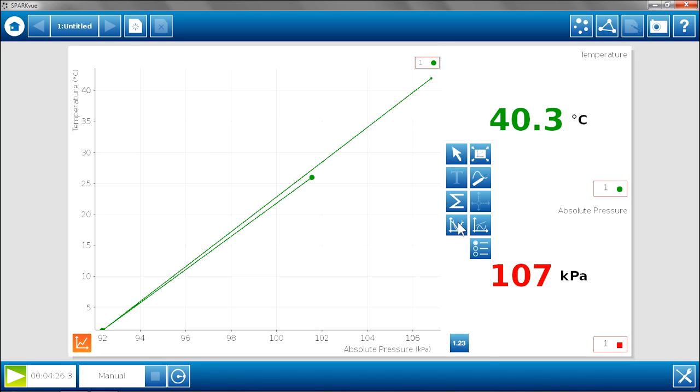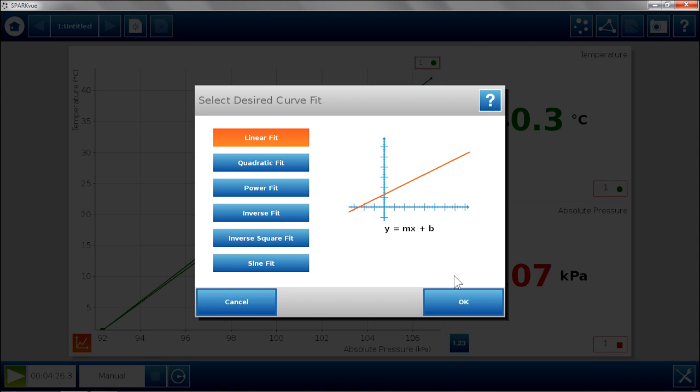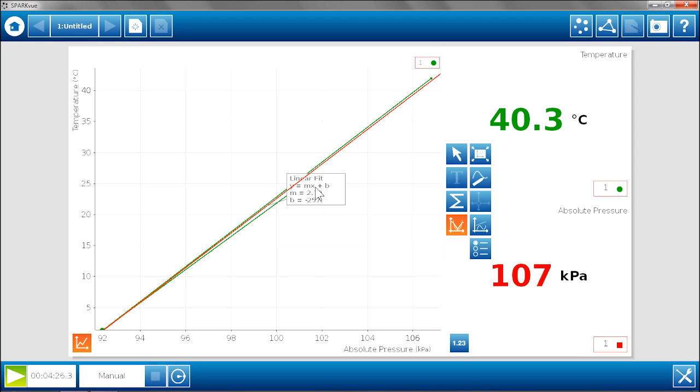So I am going to put a fit line on there. And now we have a nice fit line through those points. And this time it looks like the intercept is about negative 257.